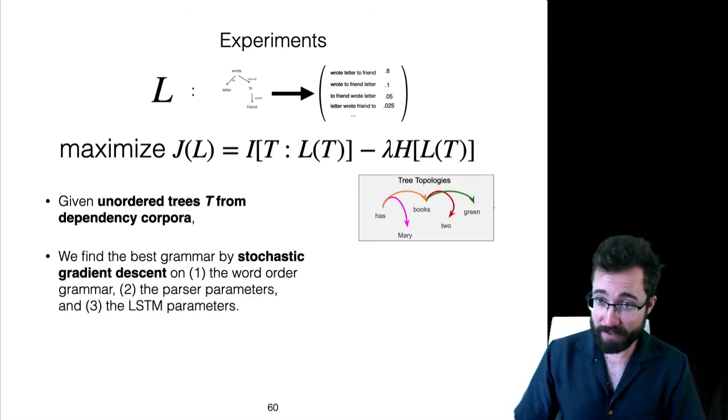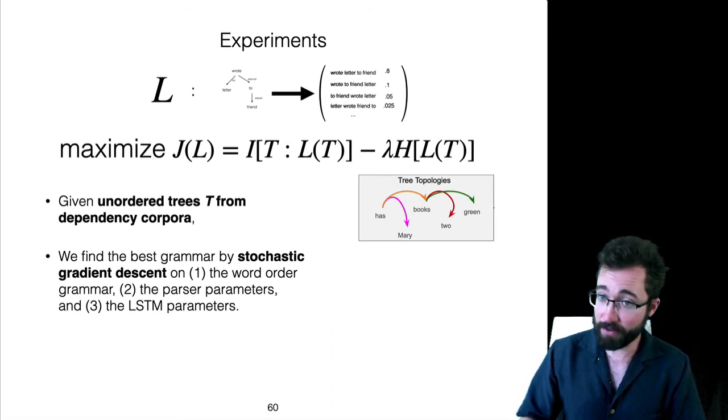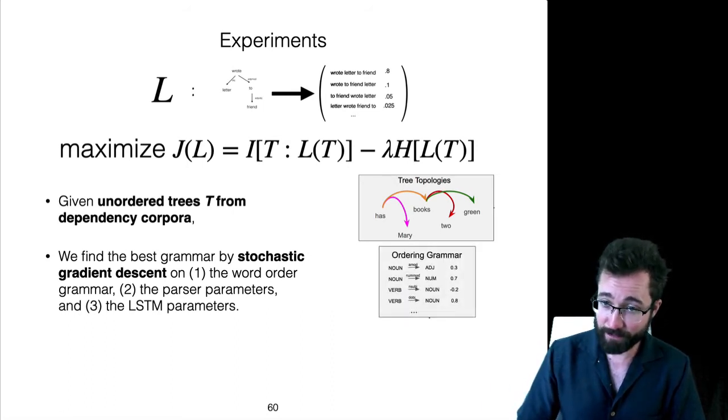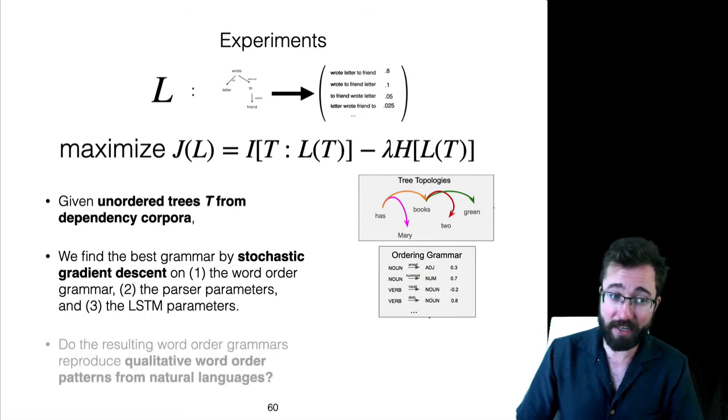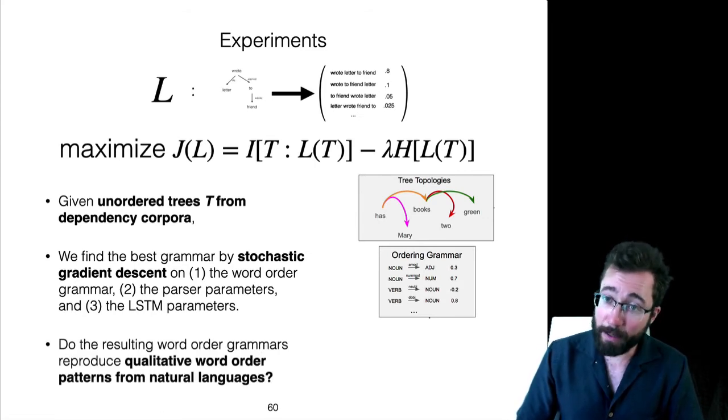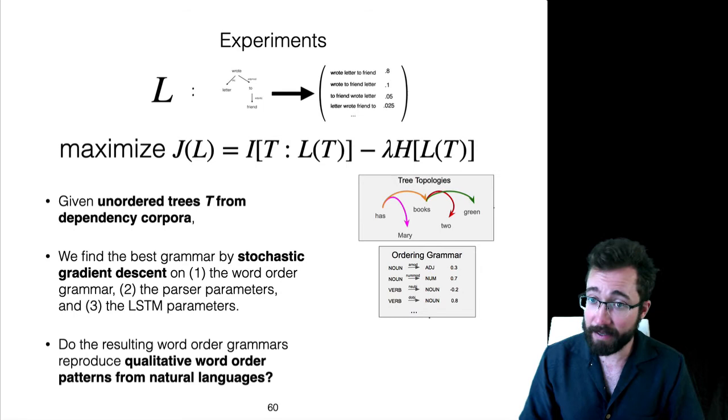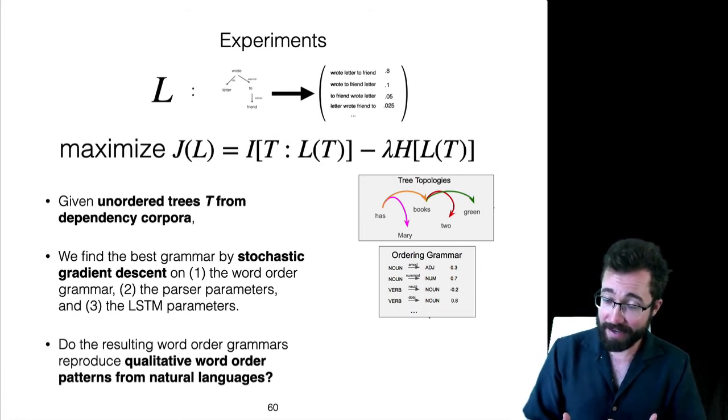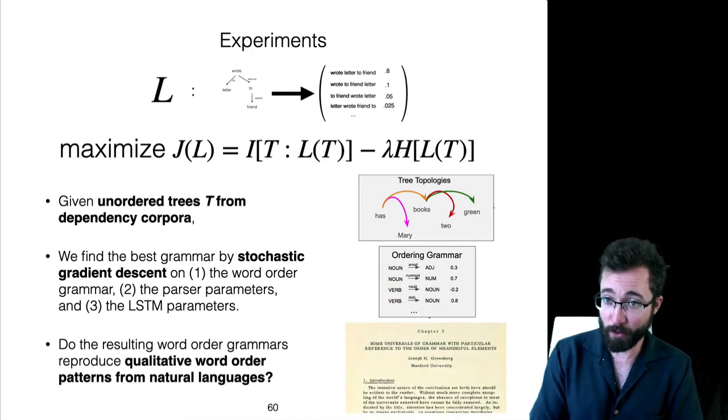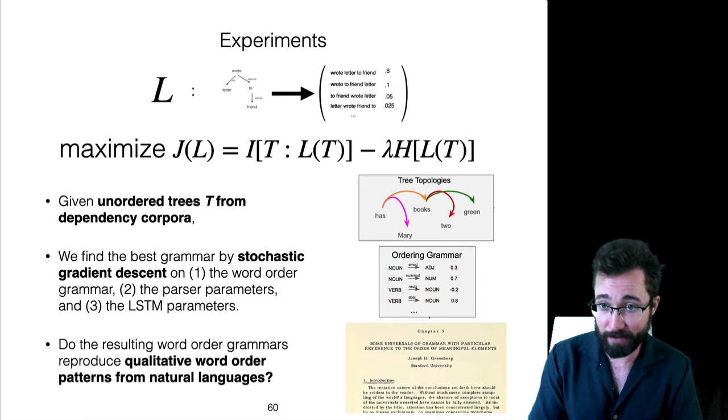We then find the best word order grammar by stochastic gradient descent on these three sets of parameters. We find optimal word order grammars, then we ask do these optimal word order grammars have the same statistical and qualitative properties as the actual word order grammars that you can observe in the corpus. Do you reproduce the Greenberg universals through this optimization process?